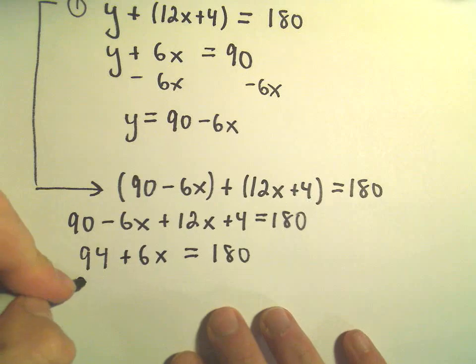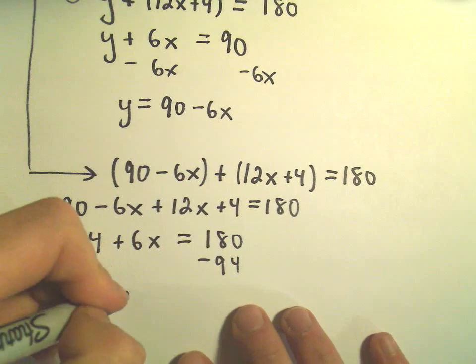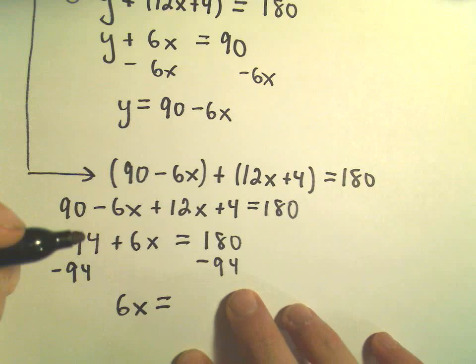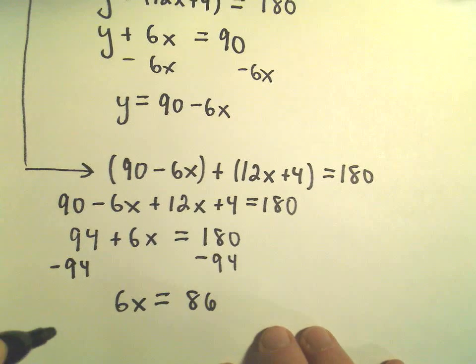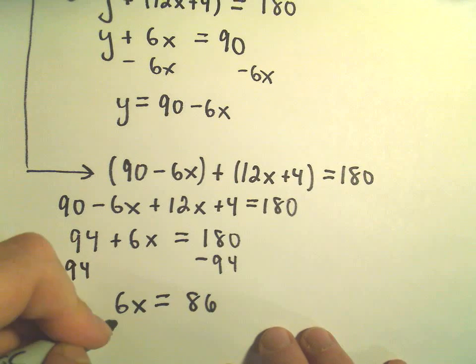So we can subtract 94 from both sides, that will give us 6x equals 86, and it looks like if we simply divide both sides by 6.